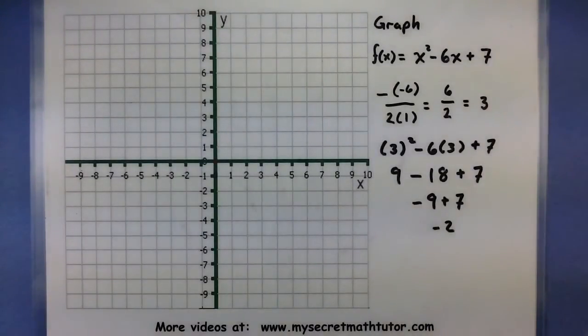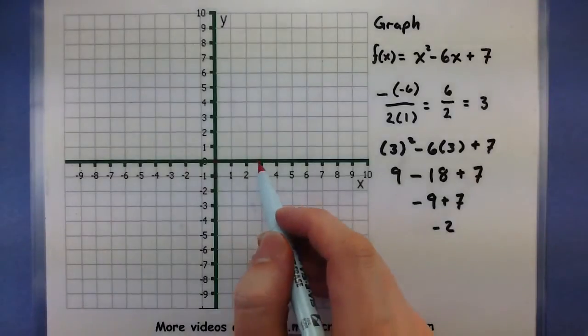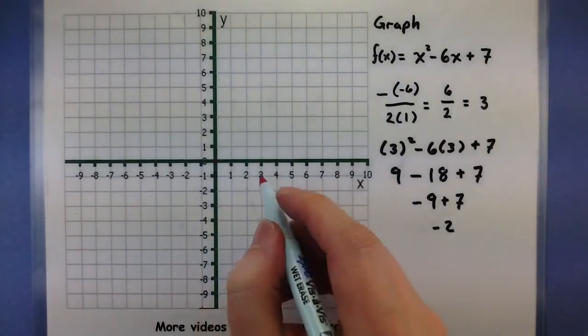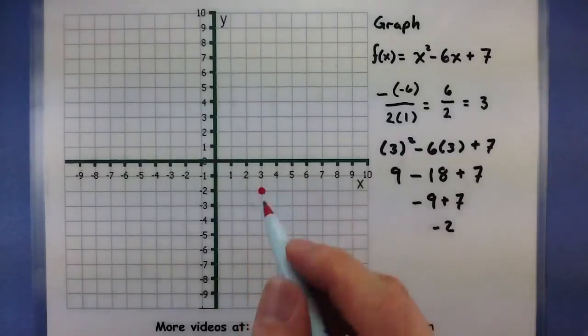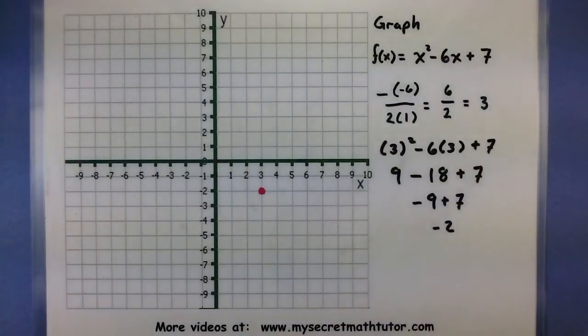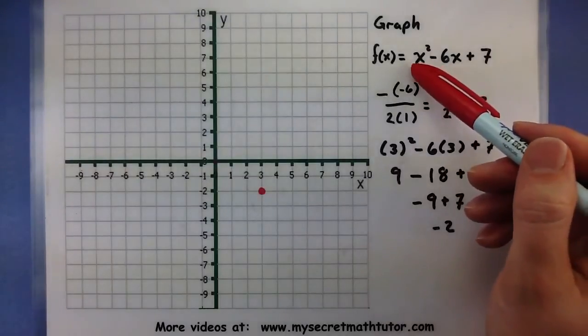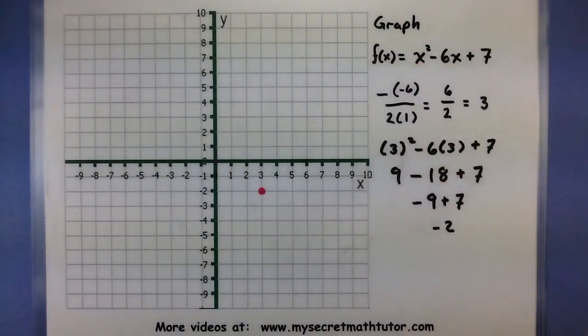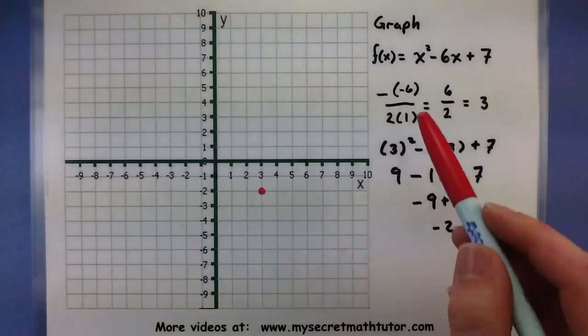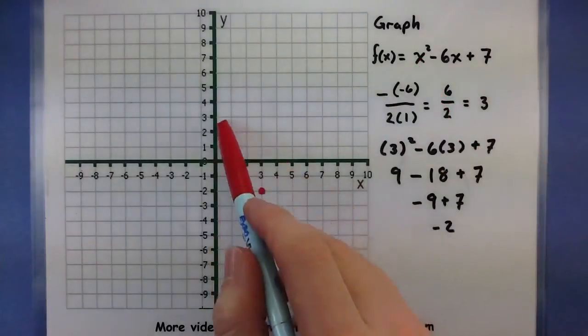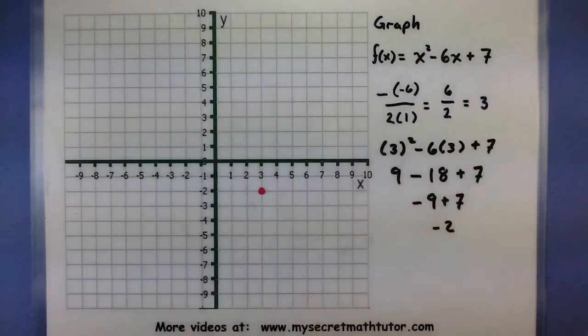So let's start off by putting that point on our graph. So 3 for our x, negative 2 for our y. Now if I look at my a-value, in this case the 1, this will tell me which direction the parabola is going. Since 1 is positive, I know this parabola is actually facing up.